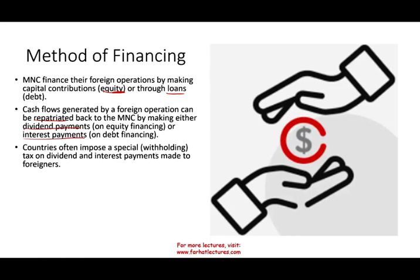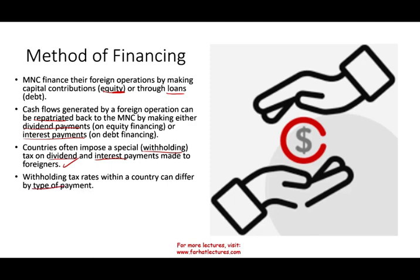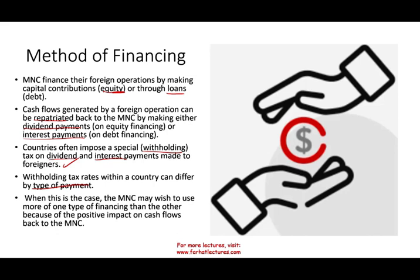Countries often impose special withholding taxes on dividend and interest payments made to foreigners. How you structure yourself matters because paying interest versus dividends makes a difference on withholding. Withholding varies from country to country and by the type of payment — some countries withhold 10–15%, some none. A multinational corporation may wish to use more than one type of financing to maximize the positive impact on cash flow. The goal is always to determine the most optimal way to reduce your taxes.